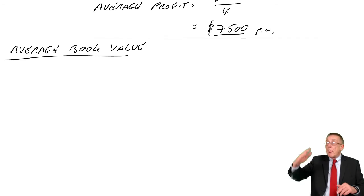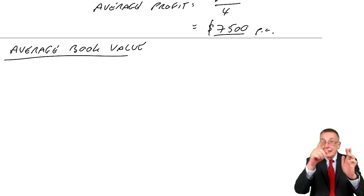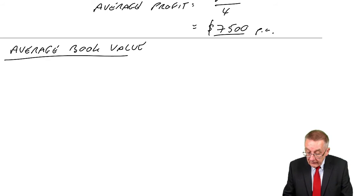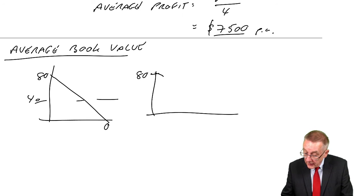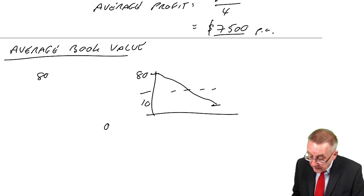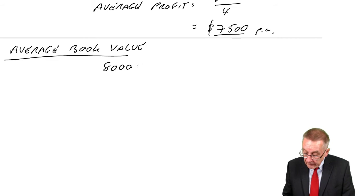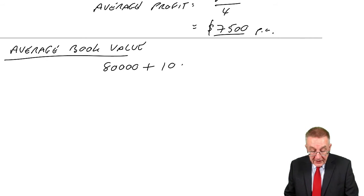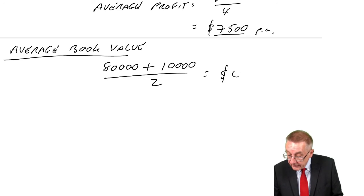But here there is a scrap value. So it starts at 80 and depreciates each year down to 10. If it went from 80 down to zero the average would be 40. But if it starts at 80 and is still worth 10 at the end, the average is a bit higher — it's 80 plus 10 over 2. So the average value in the balance sheet: 80,000 at the start, scrap 10,000 at the end, divided by 2 — on average, 45,000.